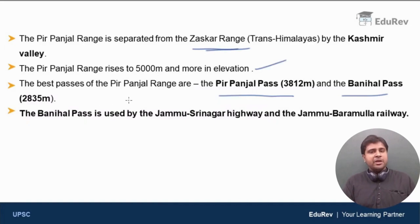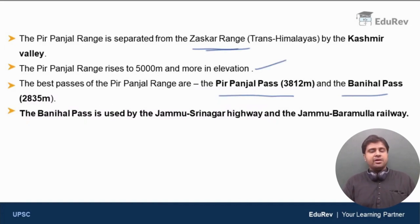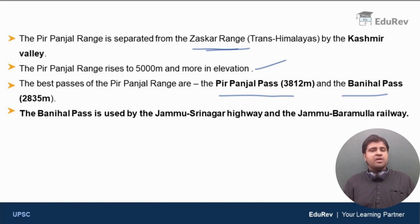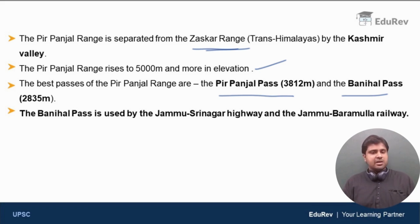The Pir Panjal Pass is situated at an elevation of 3,812 meters, and the Banihal Pass is at an elevation of 2,835 meters. Please remember these names — these are very important.